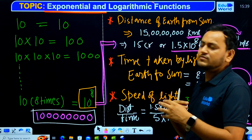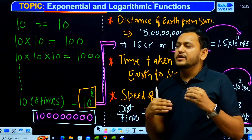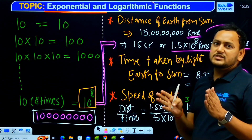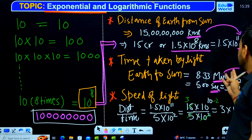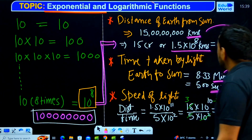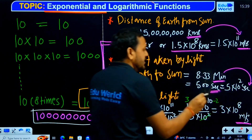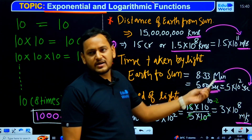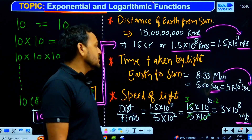Similarly, we know from our books that the time taken by sunlight to reach the Earth has been measured by scientists using many methodologies. That fixed time is 8.33 minutes, or approximately 500 seconds. We can represent 500 seconds in exponent form as 5 into 10 to the power 2, since 10 to the power 2 equals 100, and 5 times 100 equals 500.